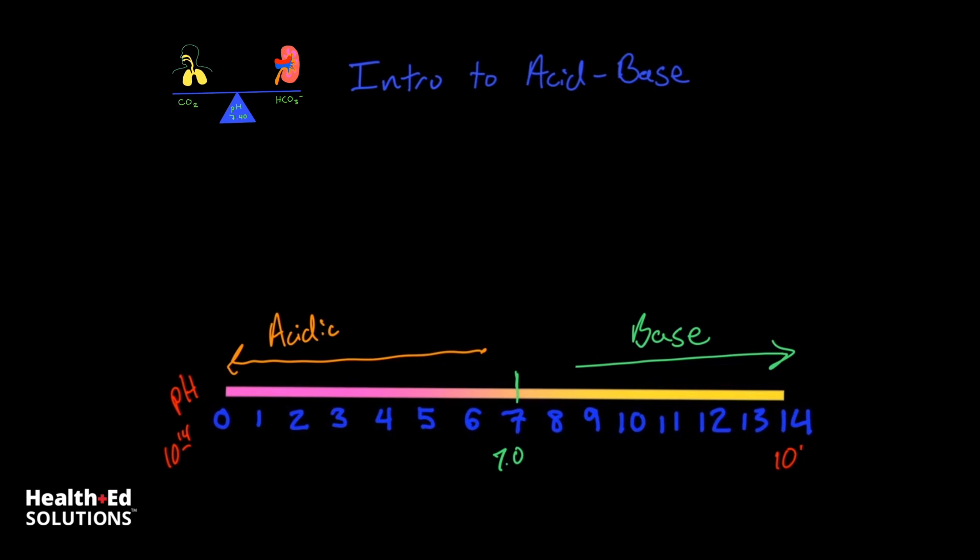However, the body is slightly basic. So the body actually has, in the serum, a pH that ranges from about 7.35 to around 7.45. So it's important to note that a neutral value of pH 7.0 is actually considered slightly acidic within the body, because the serum is slightly basic, running a pH between 7.35 and 7.45.